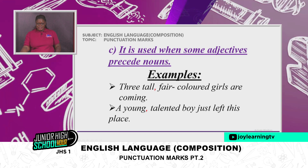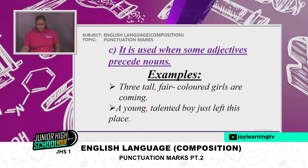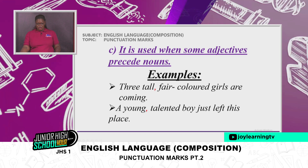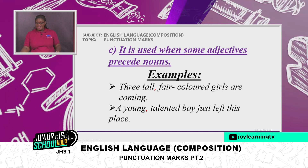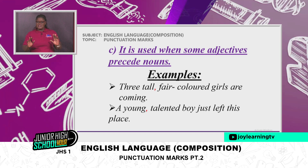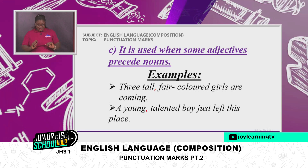Still under the comma — it is used when some adjectives precede nouns. Examples: 'Three tall, fair-colored girls are coming.' 'A young, talented boy just left this place.' You can see the comma separating the adjectives before the noun.